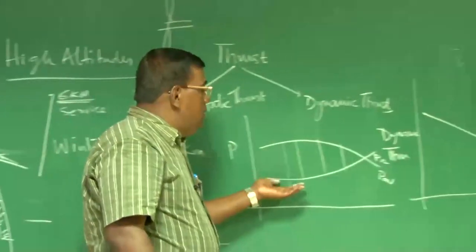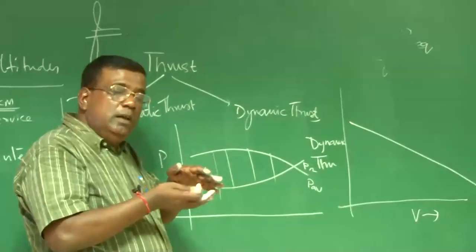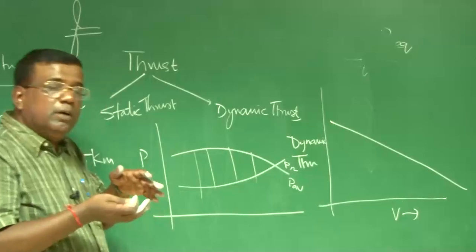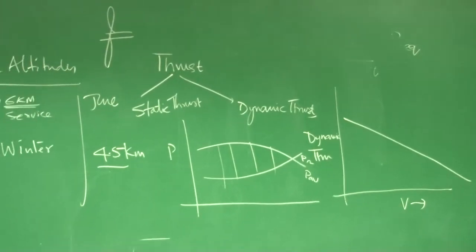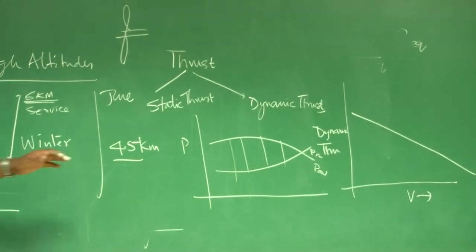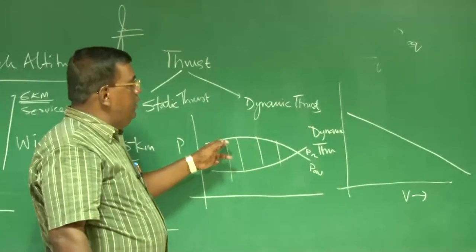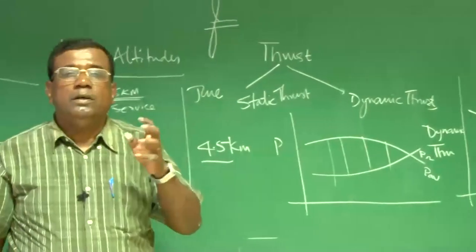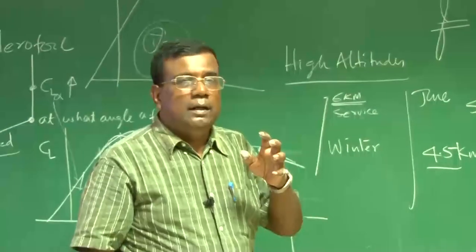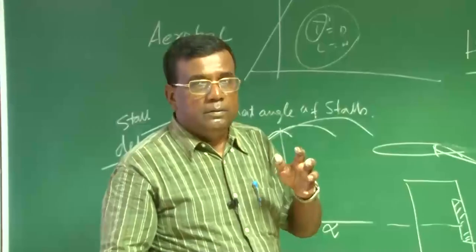But you may question, the power required was also relatively less in winter, because density was less. But what happens? If you see, the power available goes down very fast. So your excess power, availability becomes questionable. Right.